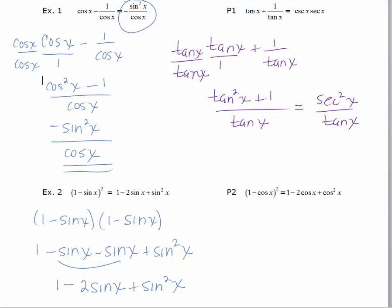Tan squared x plus one is equal to secant squared x over tan x. Here's where I have to now play around with this a little bit. I have cosecant and secant and the cosecant is one over the sine and the secant is one over the cosine. So my next job is to rewrite secant squared and tan x using sines and cosines. Coming from here, I get one over cosine squared x divided by sine over cosine x. So I'm going to multiply by the reciprocal.